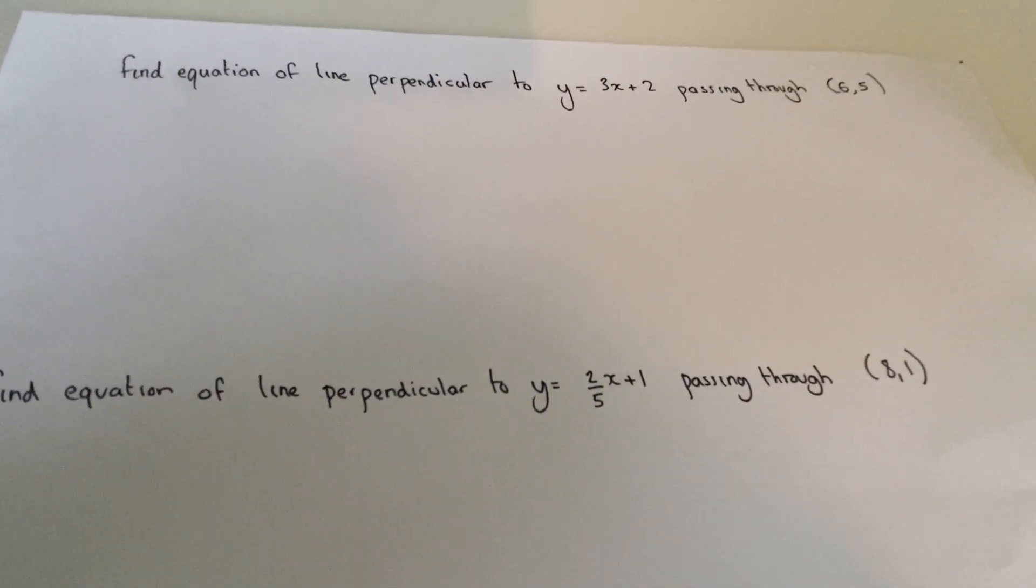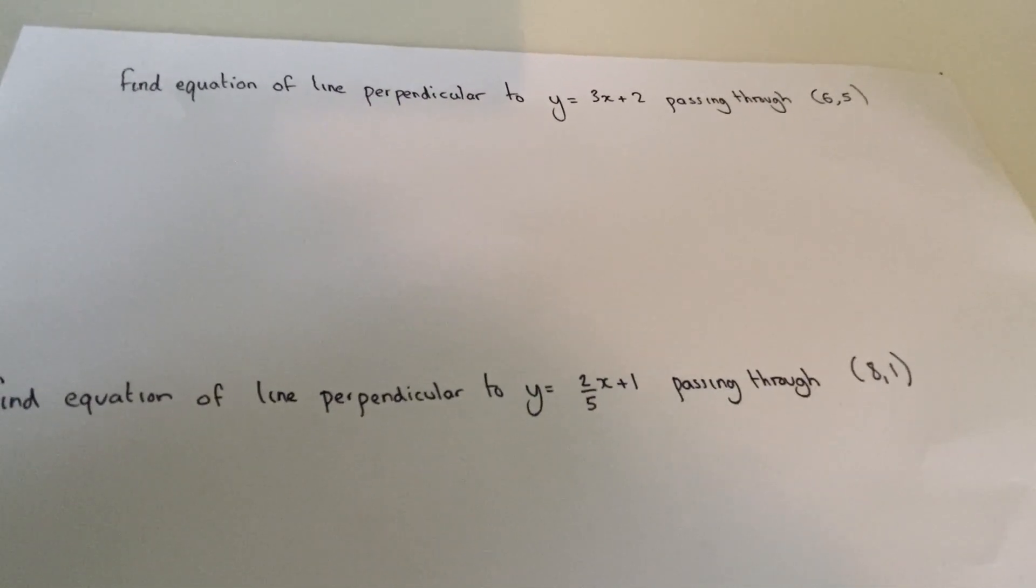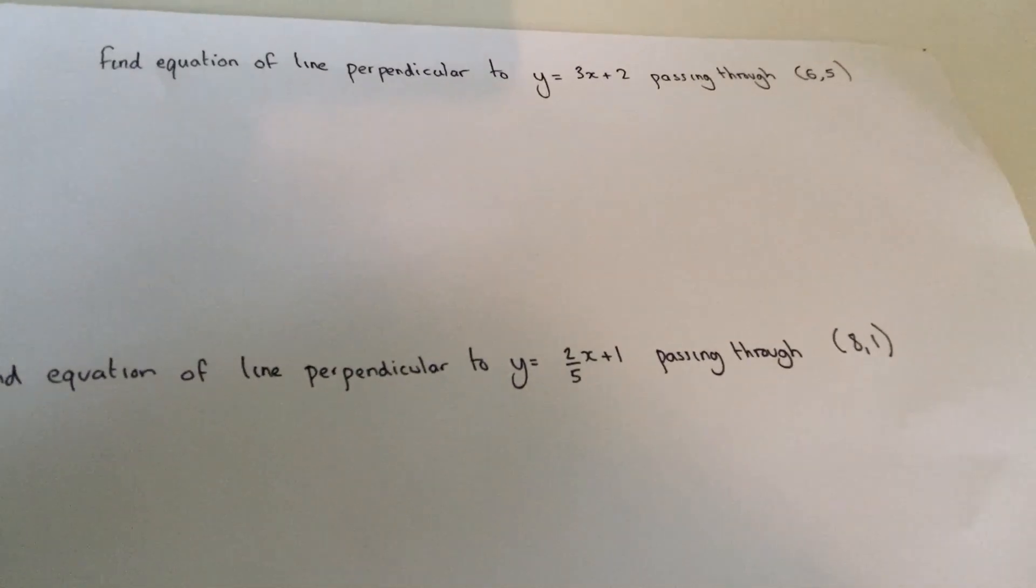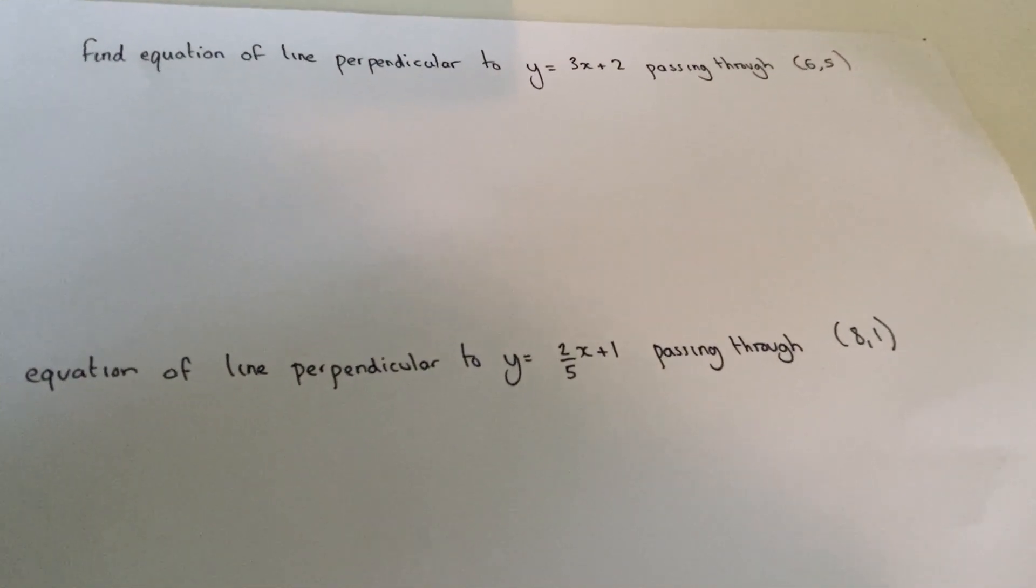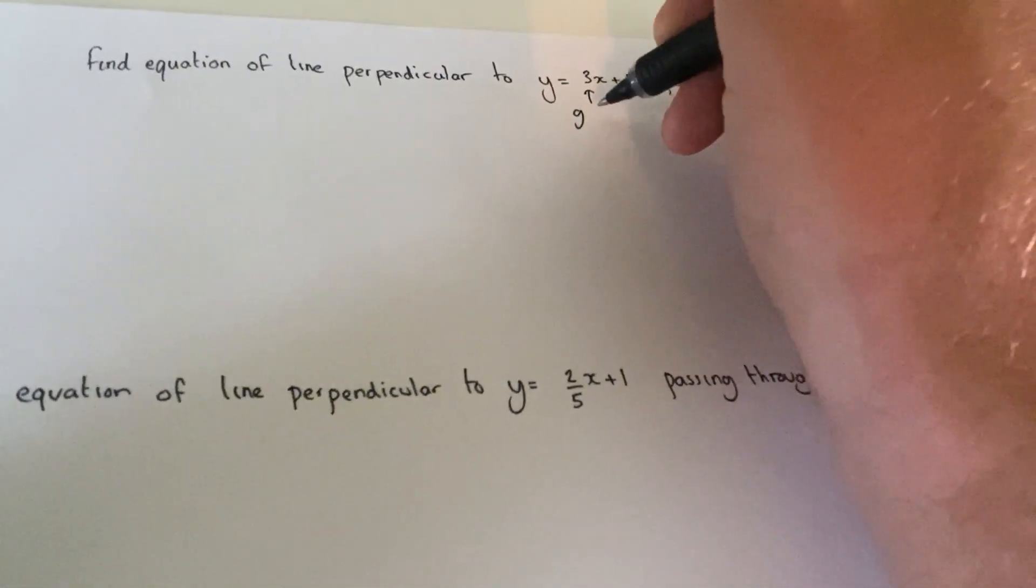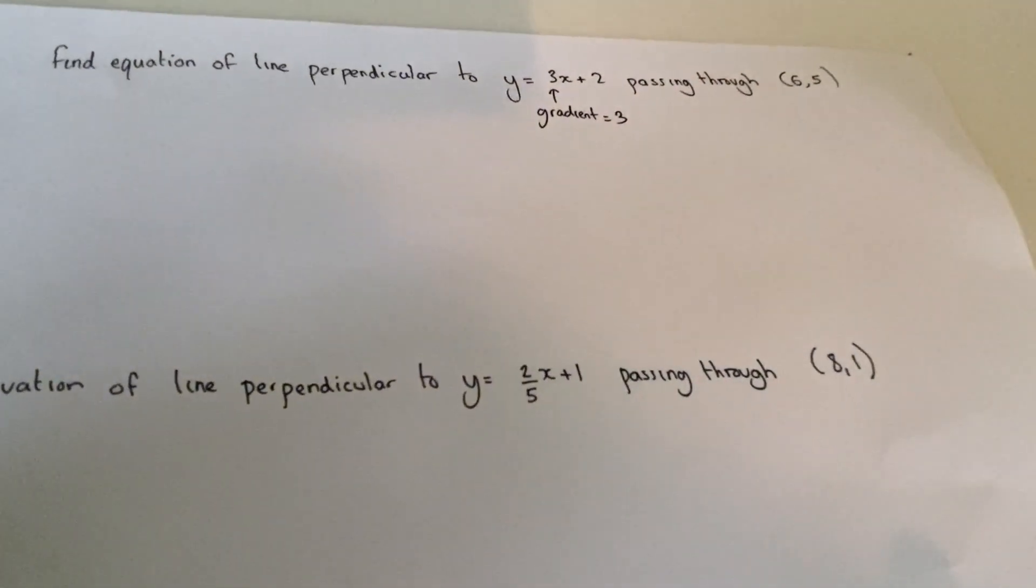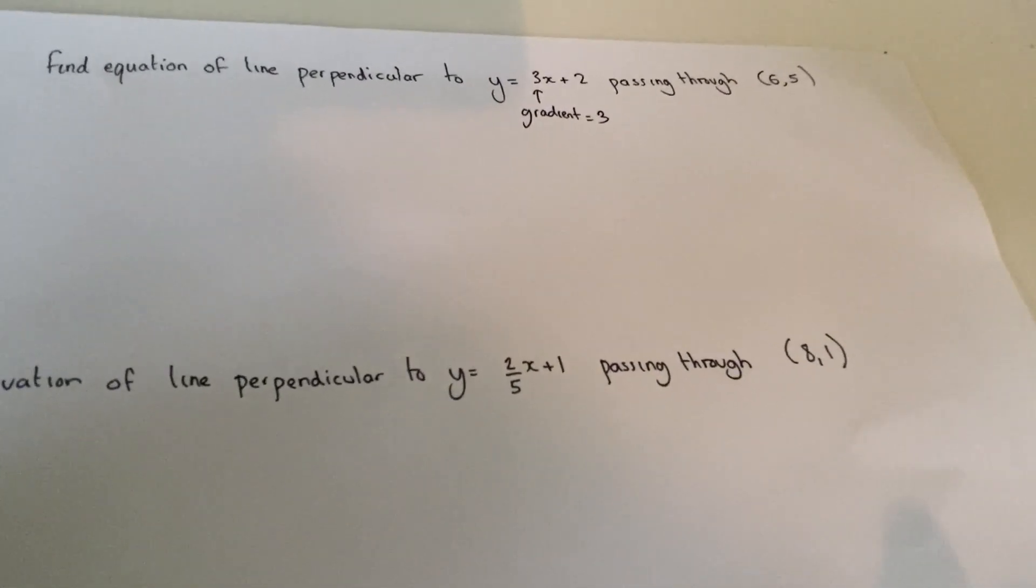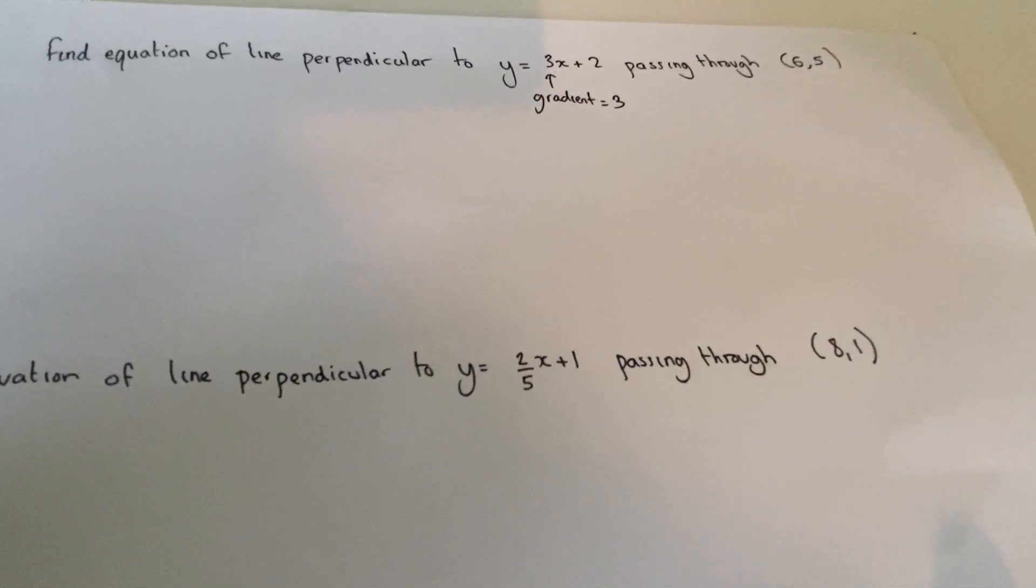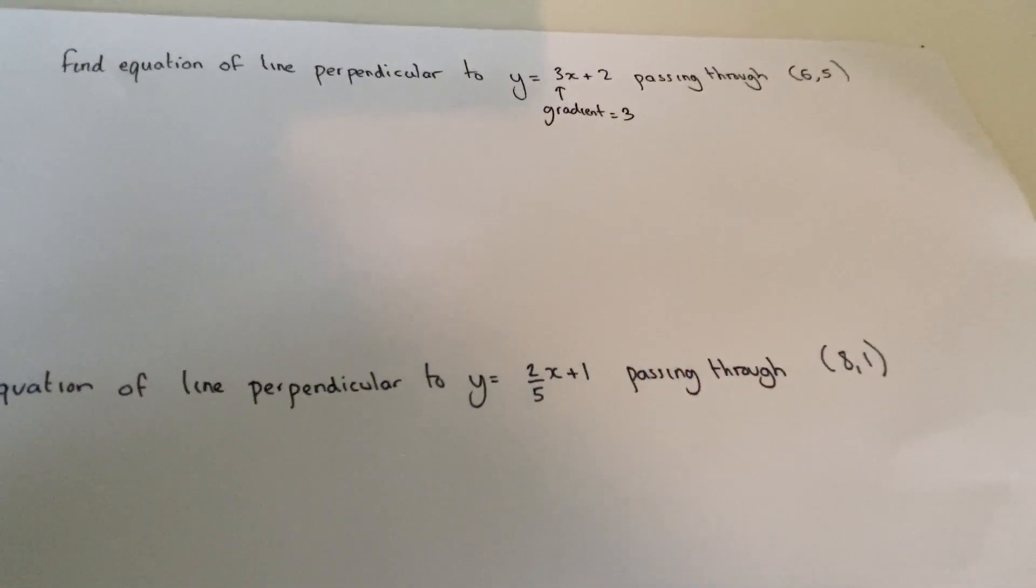This video reviews finding the equations of perpendicular lines. In the first question we have a line which is y equals 3x plus 2. The line y equals 3x plus 2 has a gradient of 3 and it passes through 2 on the y-intercept or the y-axis. Now our new line needs to be perpendicular or at right angles and needs to pass through a different coordinate, and the coordinate is 6, 5.